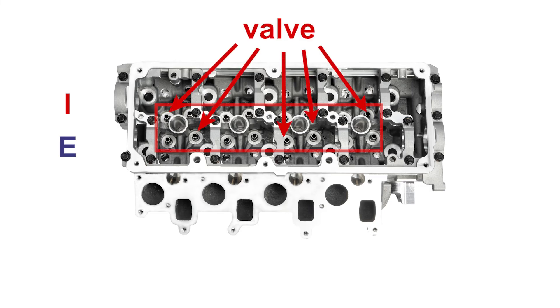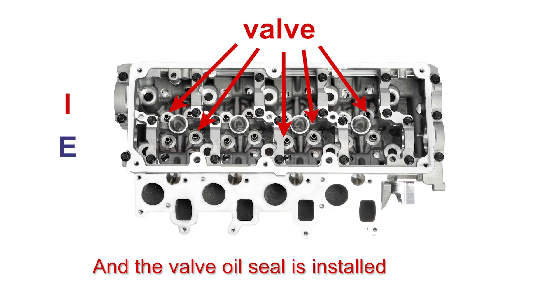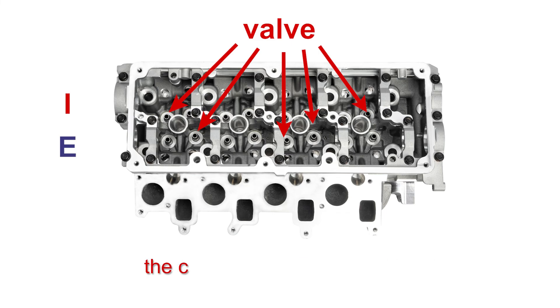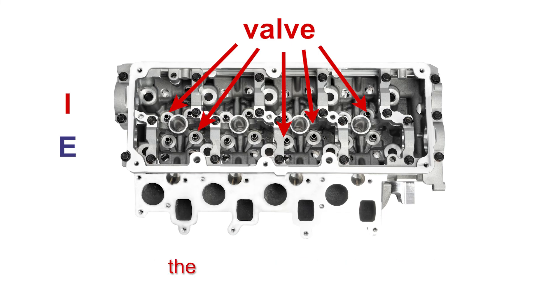The position indicated in the red area is where the valve is installed, and the valve oil seal is installed inside to prevent the oil that lubricates the camshaft from leaking into the combustion chamber.